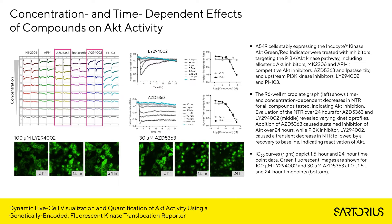Next, we'll look at concentration and time-dependent effects of compounds on AKT activity. A549 cells stably expressing the Incusite Kinase AKT indicator were treated with inhibitors targeting the PI3K-AKT kinase pathway, including allosteric AKT inhibitors MK2206 and API1, competitive AKT inhibitors AZD5363 and Ipatasertib, and upstream PI3K kinase inhibitors LY-294002 and PI103. The 96-well microplate graph shows time and concentration-dependent decreases in the nuclear translocation ratio for all compounds tested over a 24-hour period in every single well of that microplate.